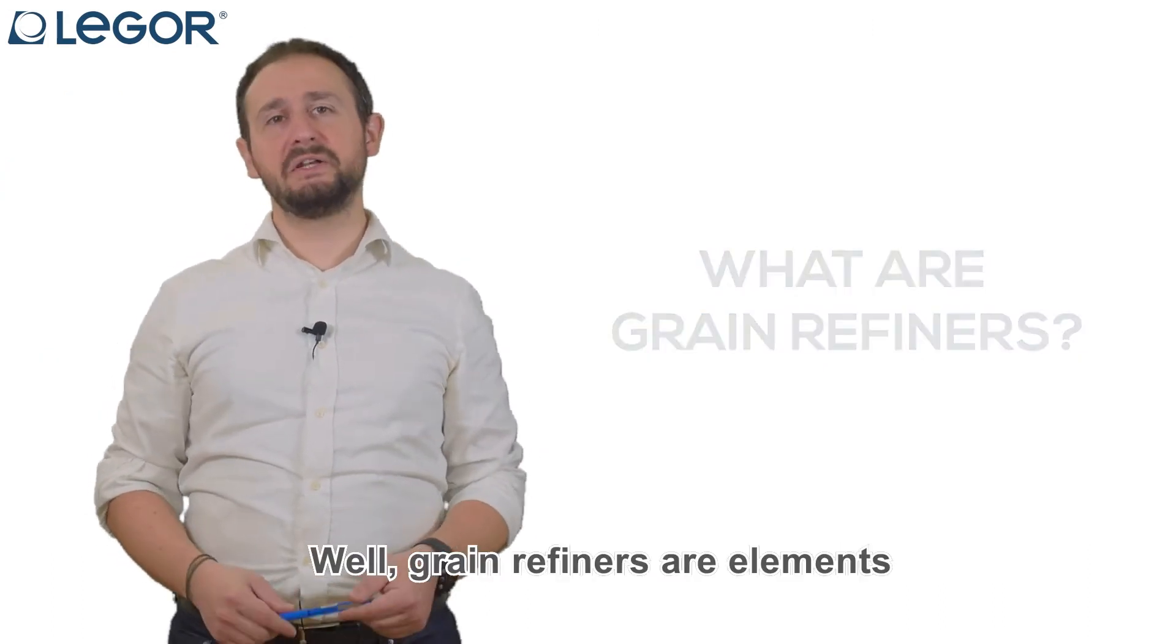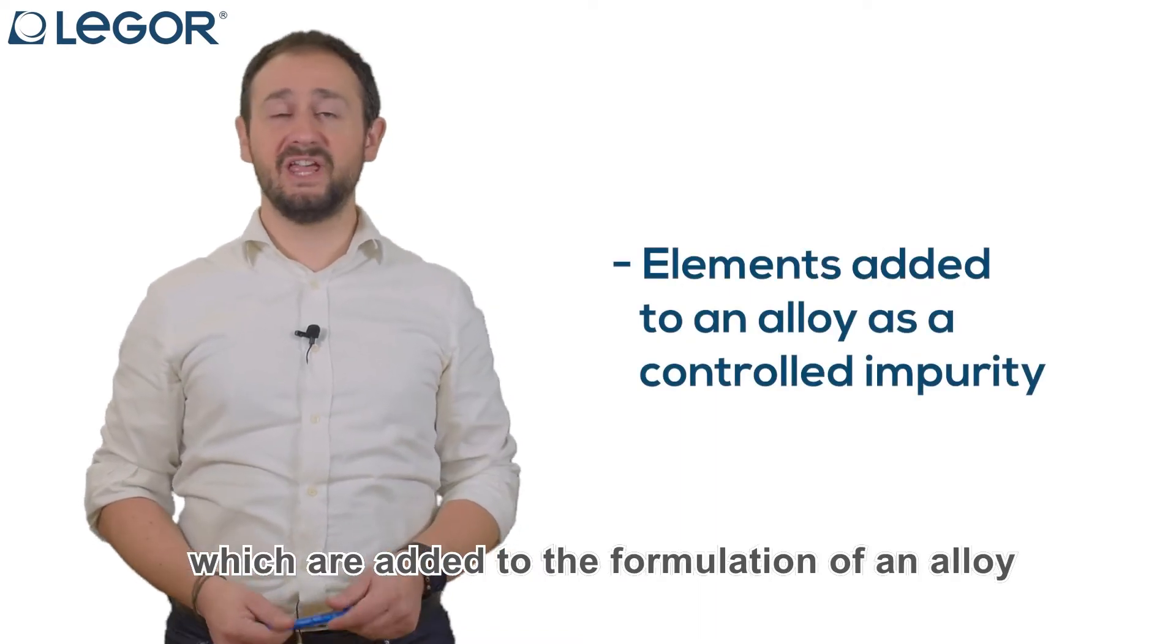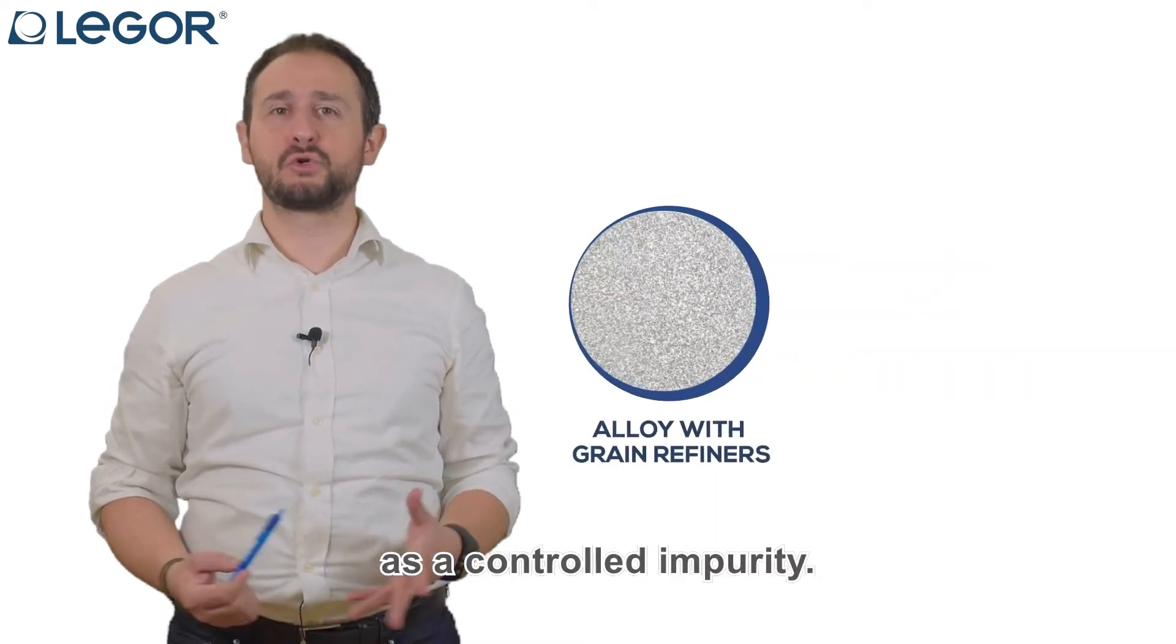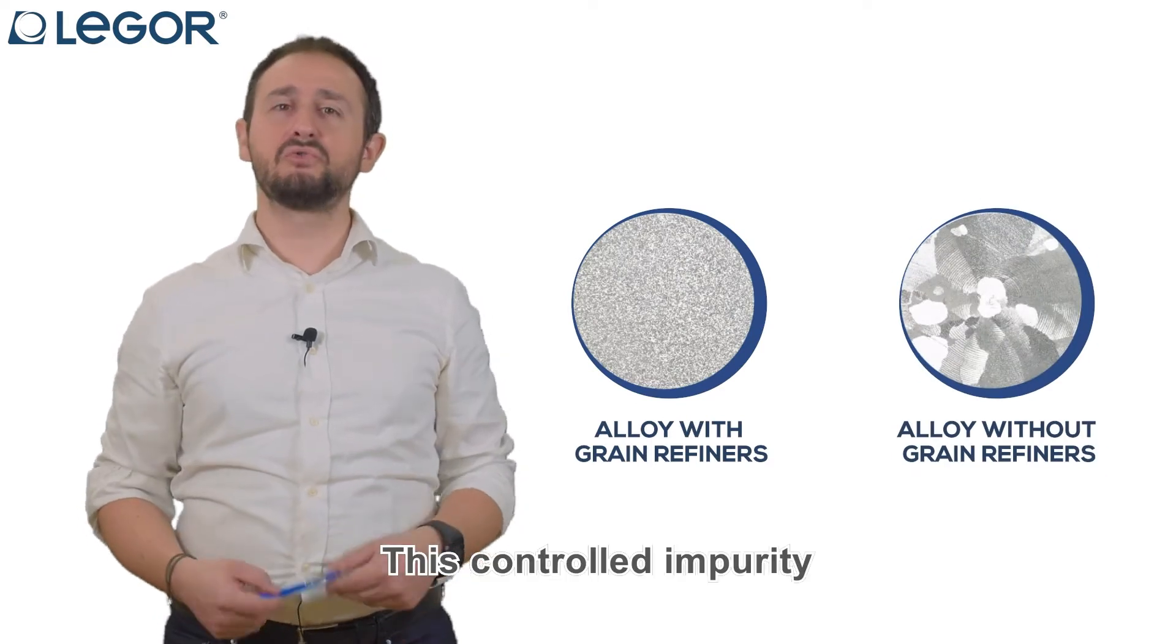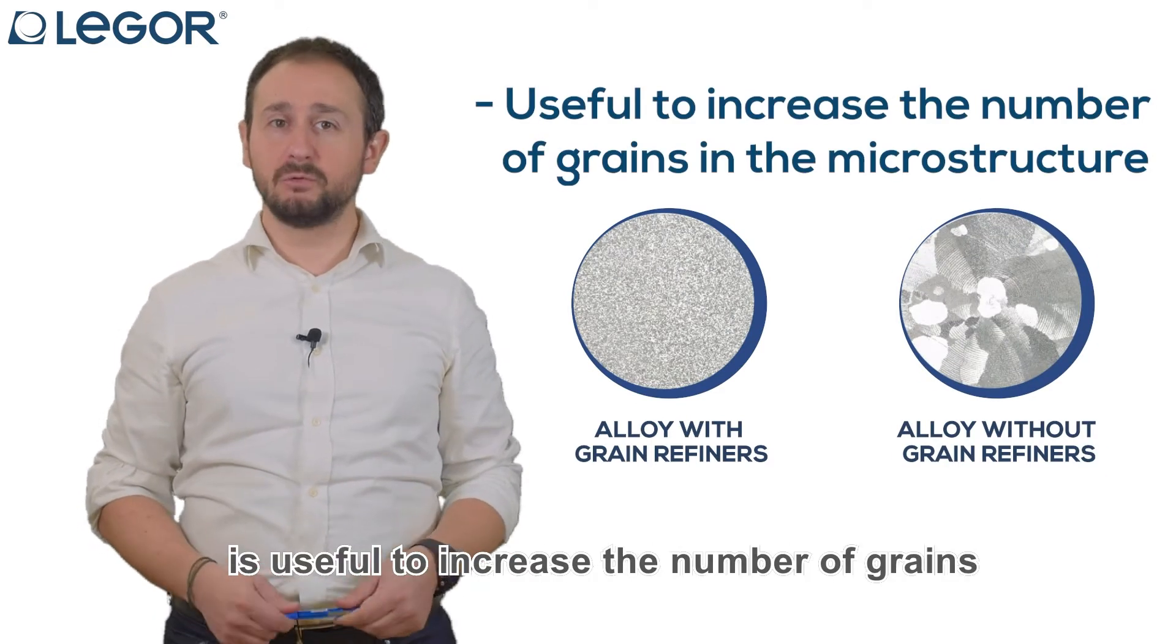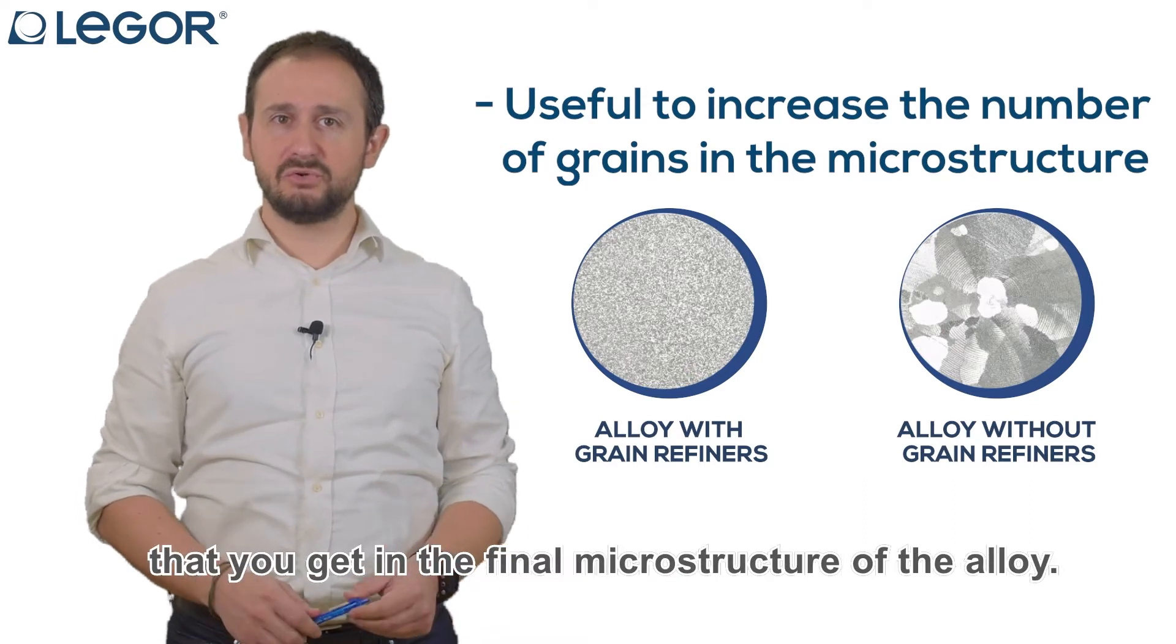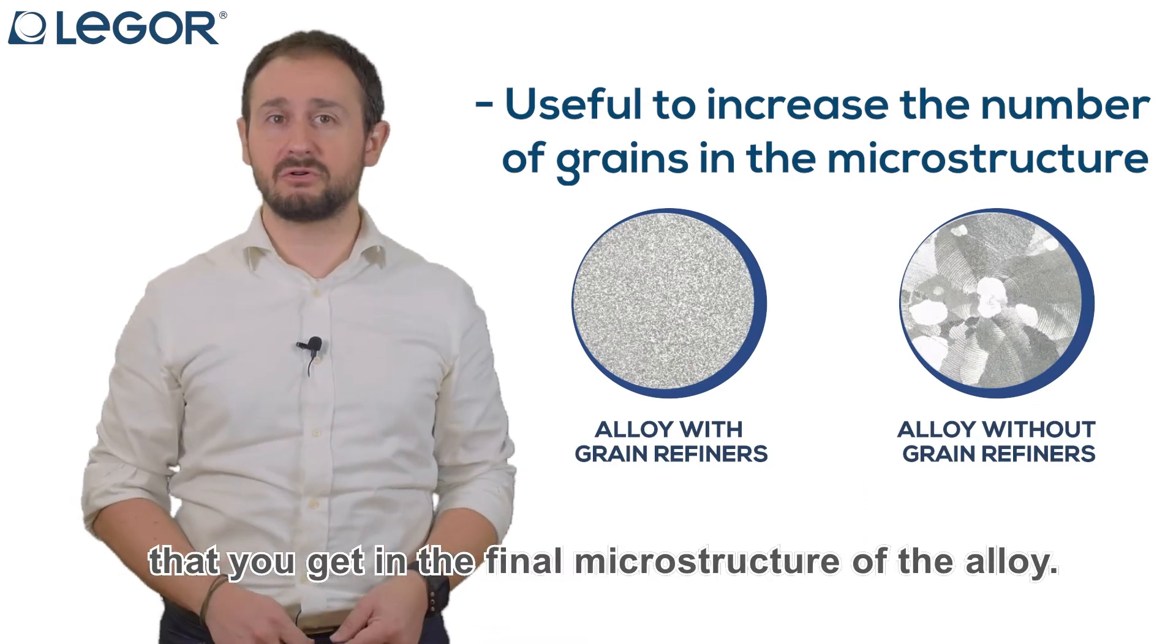Well, grain refiners are elements which are added to the formulation of an alloy as a controlled impurity. This controlled impurity is useful to increase the number of grains that you get in the final microstructure of the alloy.